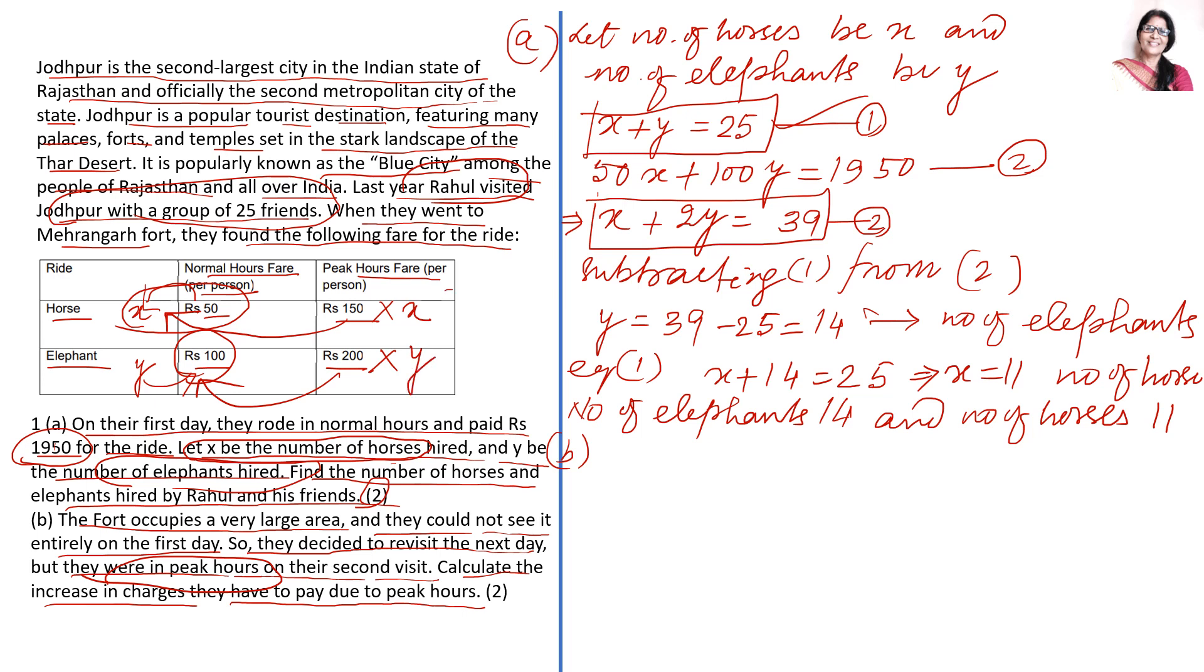So in place of X I will put 11. For Y I will put 14. So total fare on second day is 11 × 150 plus 14 × 200.